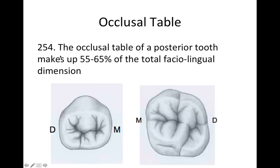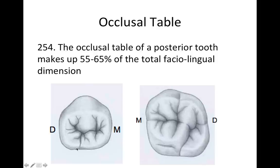The occlusal table of a posterior tooth makes up about 55 to 65 percent of the total facial-lingual dimension. There's an important distinction between occlusal table and occlusal outline, because on the boards if you don't read carefully enough, you could get tricked. The occlusal table is rectangular in shape. The occlusal outline, on the other hand, has cusps coming out that change the outline shape. The occlusal table makes up about 55 to 65 percent of the total facial-lingual dimension.